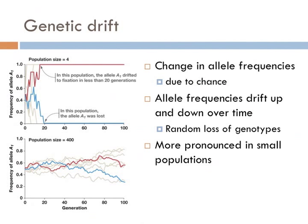Genetic drift is the change in frequency of a gene variant in a population due to random sampling. The alleles in the offspring are a sample of those in the parents, and chance has a role in determining whether a given individual survives and reproduces. A population's allele frequency is the fraction of copies of one gene that share a particular form. Genetic drift may cause gene variants to disappear completely, thereby reducing genetic variation. When there are few copies of an allele, the effect of genetic drift is larger; when there are many copies, the effect is smaller.